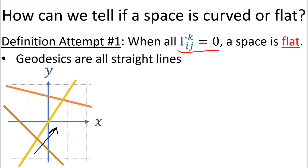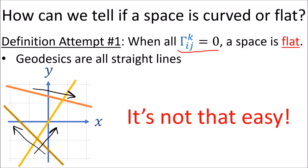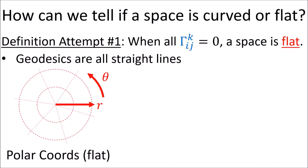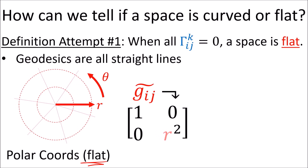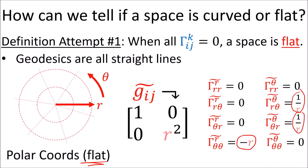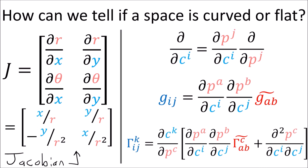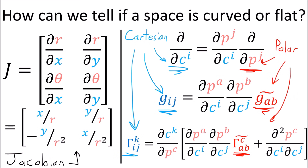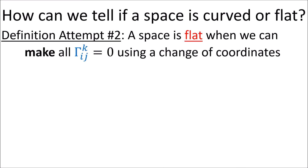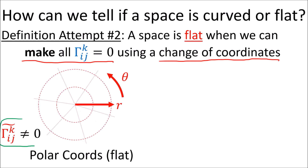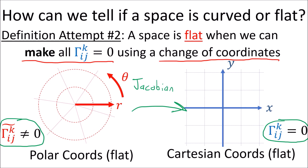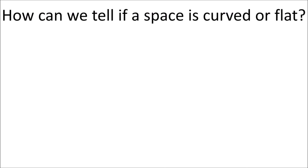However, it's not that easy. We know that 2D polar coordinates also describe flat space, but the metric tensor is not the identity matrix and the connection coefficients are not all zero. However, we can transform polar coordinates into Cartesian coordinates using the Jacobian to transform the basis vectors, the metric tensor, and the connection coefficients. So attempt number two is: a space is flat when we can make the connection coefficients all equal to zero using a change of coordinates. Under this definition the 2D plane would be flat even with a curvilinear coordinate system like polar coordinates. However, this definition isn't good enough either.